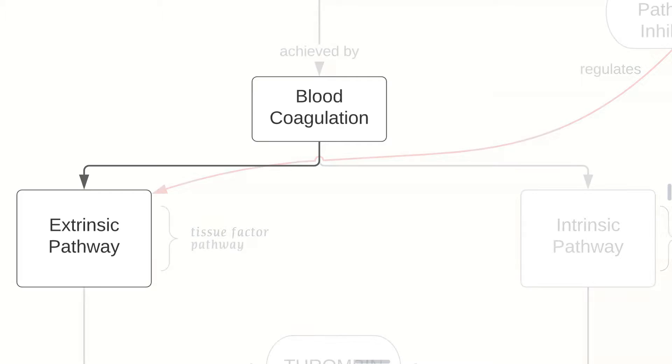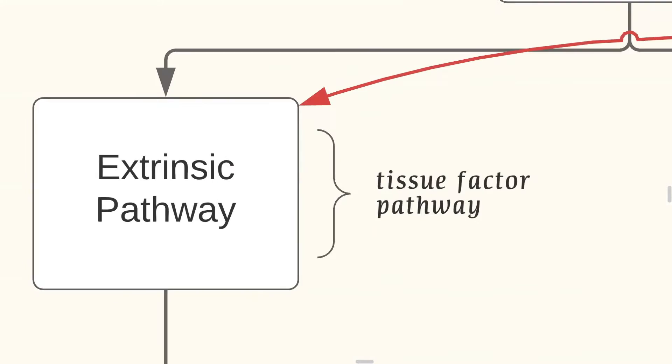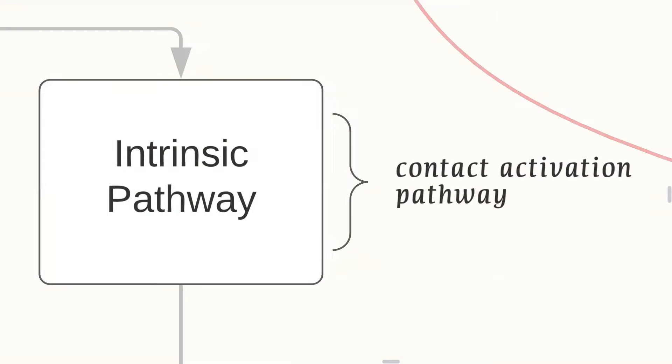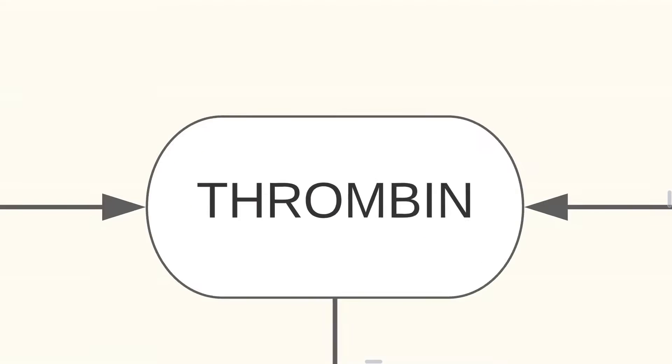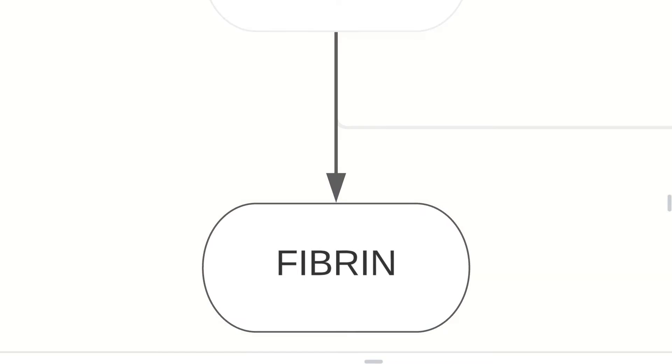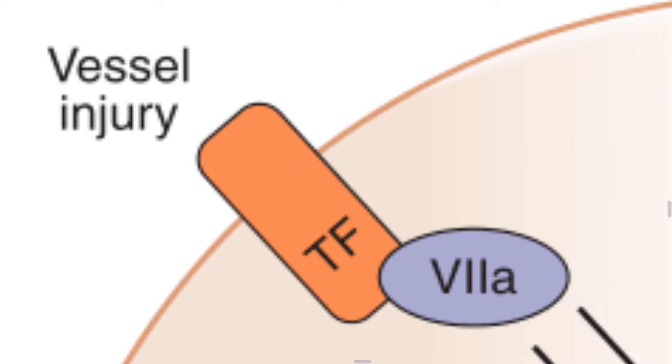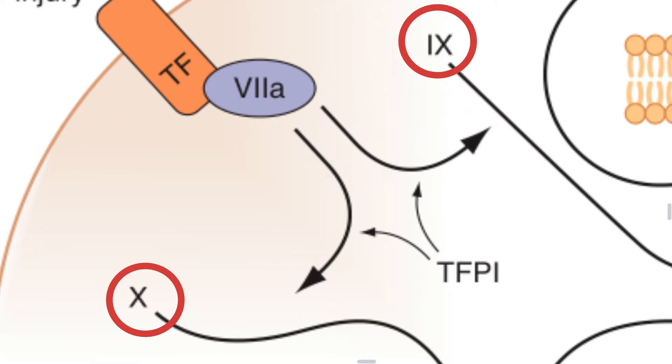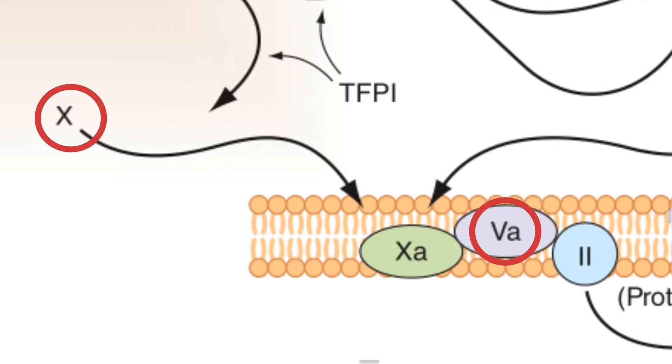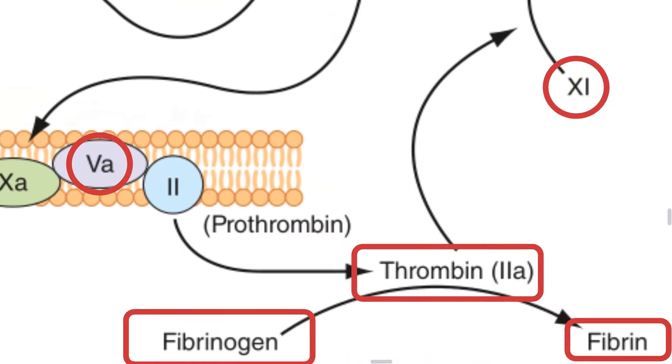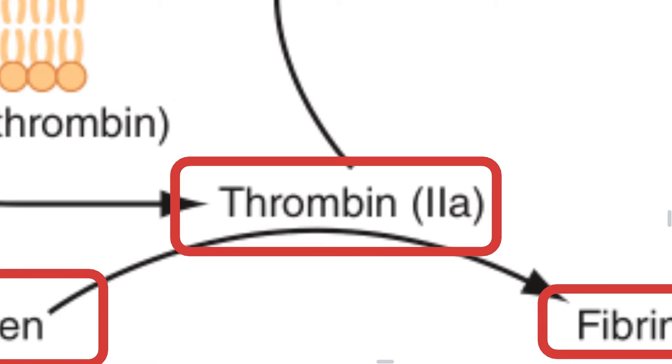Coagulation goes by extrinsic pathway or by the intrinsic pathway, both of which produce thrombin, which subsequently produces fibrin. Upon vessel injury, the tissue factor binds with an activated factor 7, which in turn activates factor 10 and 9. Factor 9 activates factor 8 and factor 5 respectively, which produces our beloved thrombin, which produces fibrinogen to fibrin.